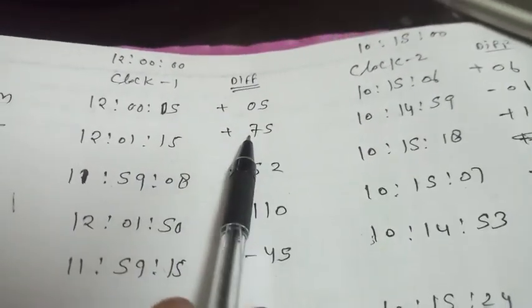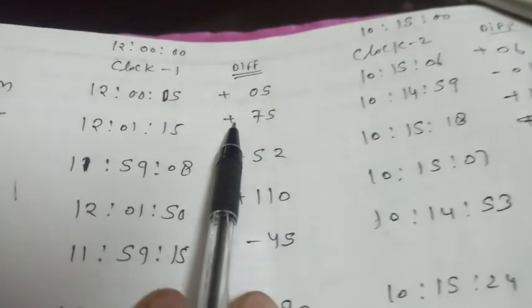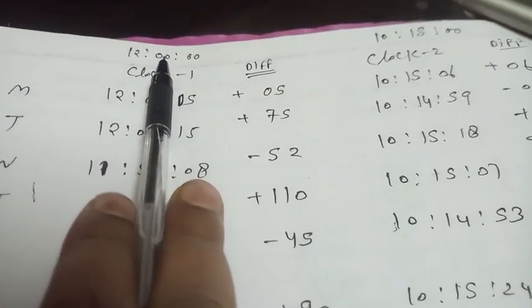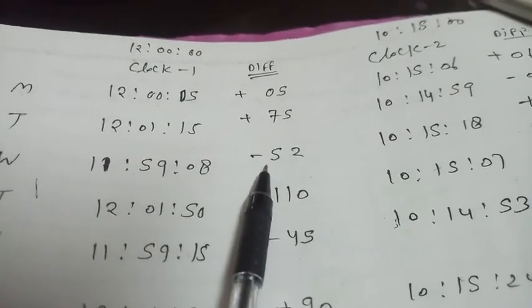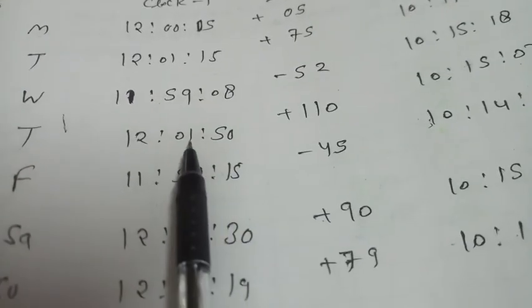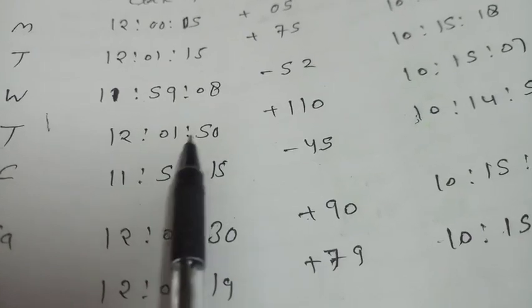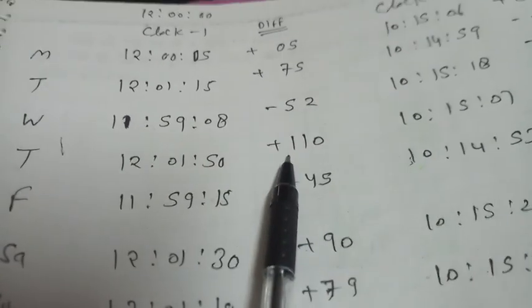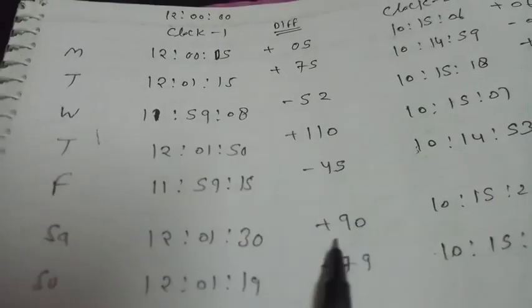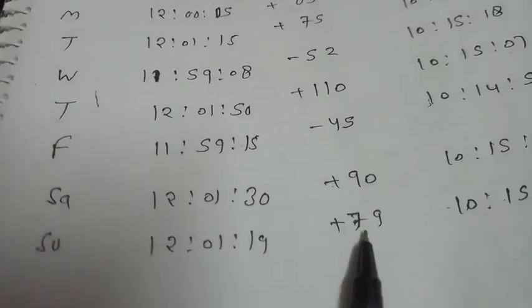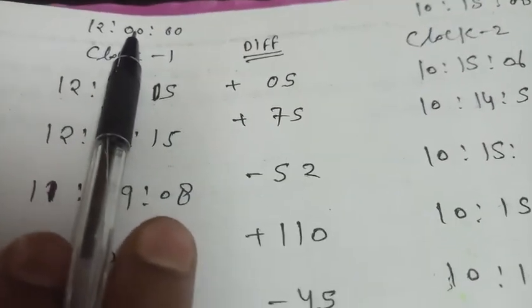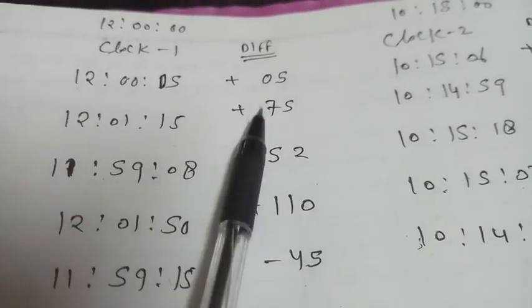Here the standard time is 5 seconds, here is 1 minute 15 seconds - 1 minute means 60 seconds plus 15, which is 75 seconds positive error. Here the standard time is 12:00 noon, so negative error. Standard time 12:00 means 60 seconds plus 50 is 110 seconds, 45 seconds, 90 seconds, 79 seconds. So at 12:00 noon, positive error means negative error.